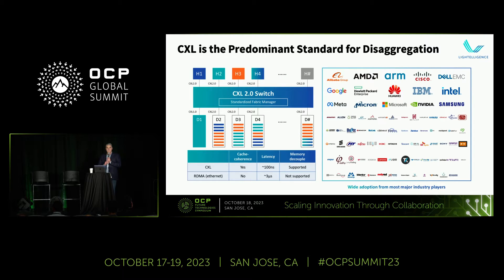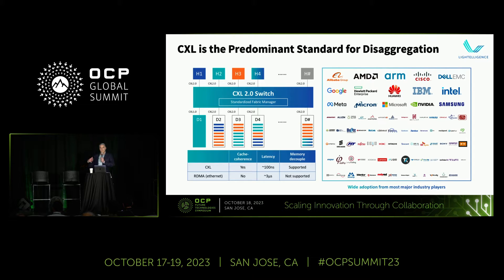A little about CXL for those not aware: there are 250 member companies, and it's been widely adopted by all the big names. If you know about PCI Express, CXL basically adds memory and cache coherency functions onto the PCI interconnect, enabling it to be a fast, effective memory interconnect.